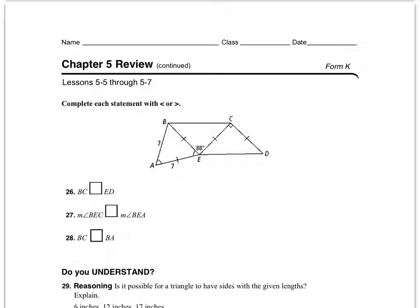For question 26, I'm comparing BC and ED. In the picture, I can see tick marks indicating two sets of congruent sides between the two triangles. I also see an 88-degree angle and a 90-degree angle. Since BC corresponds to the smaller 88-degree angle, BC must be smaller than ED.